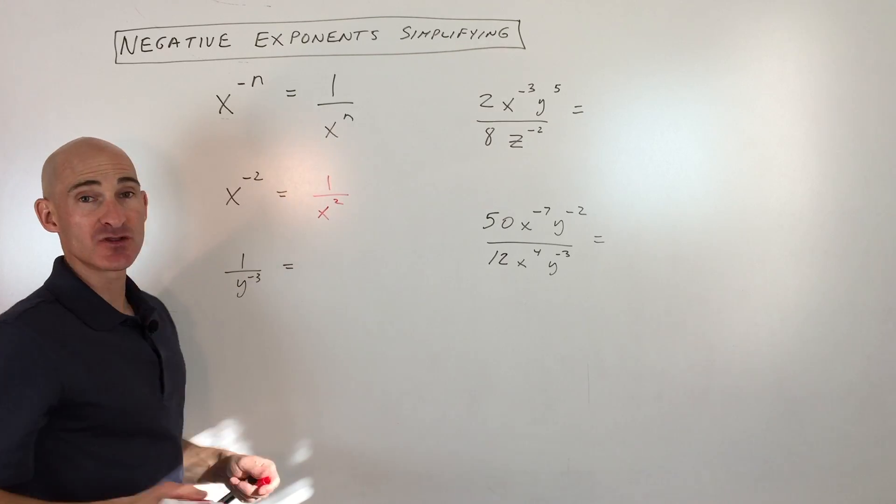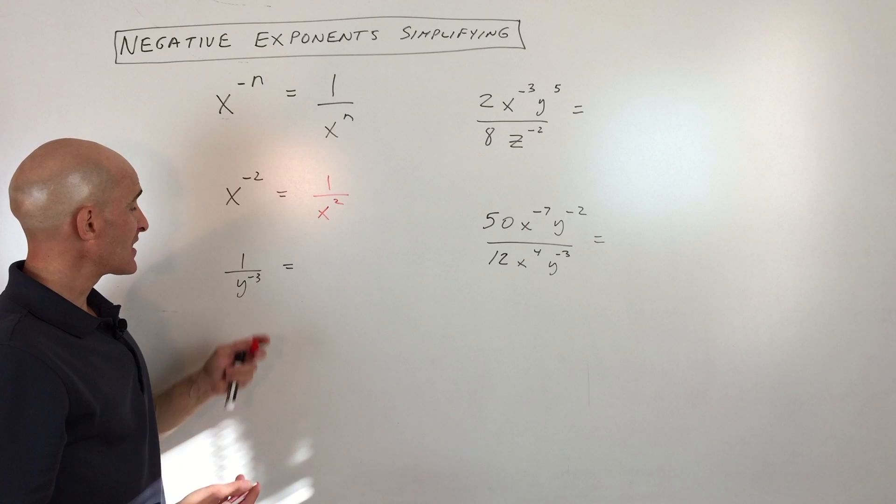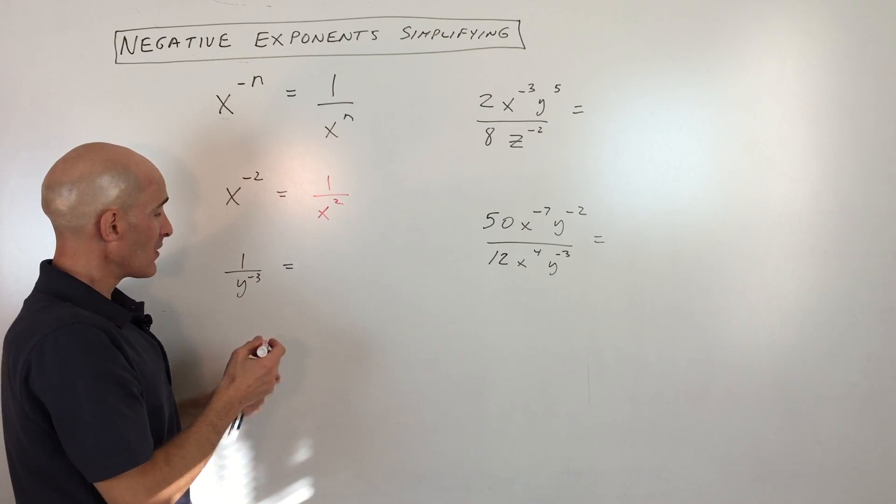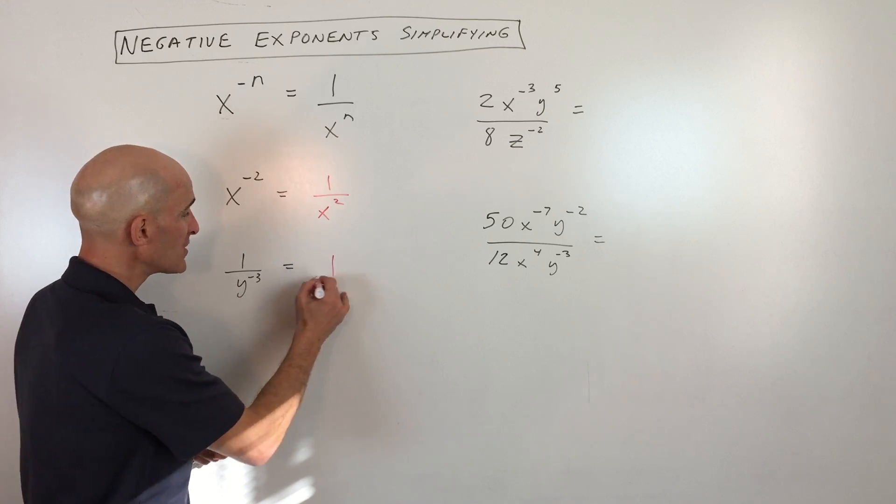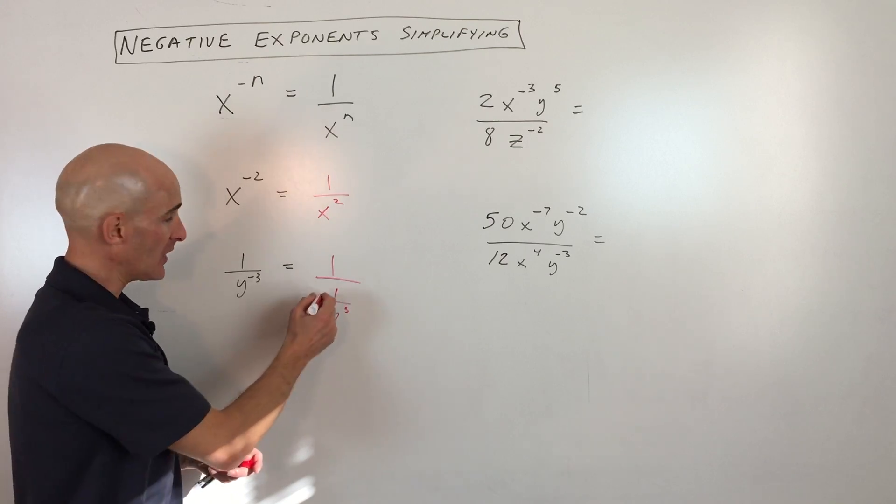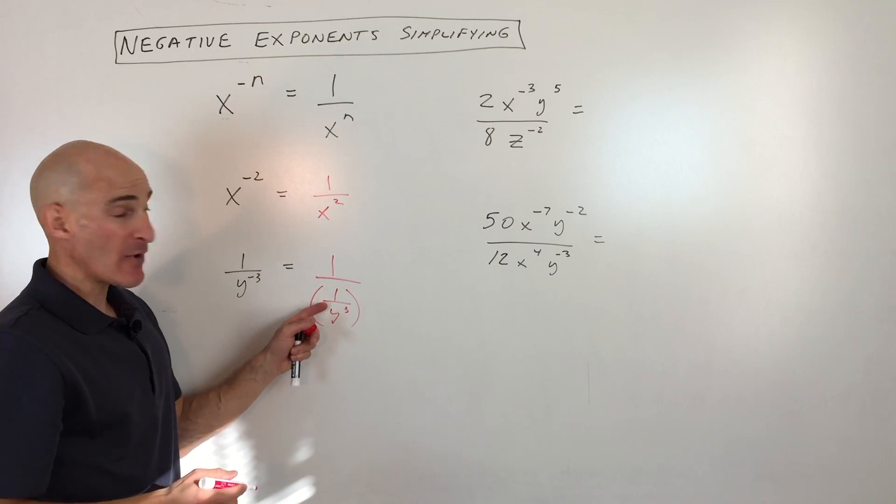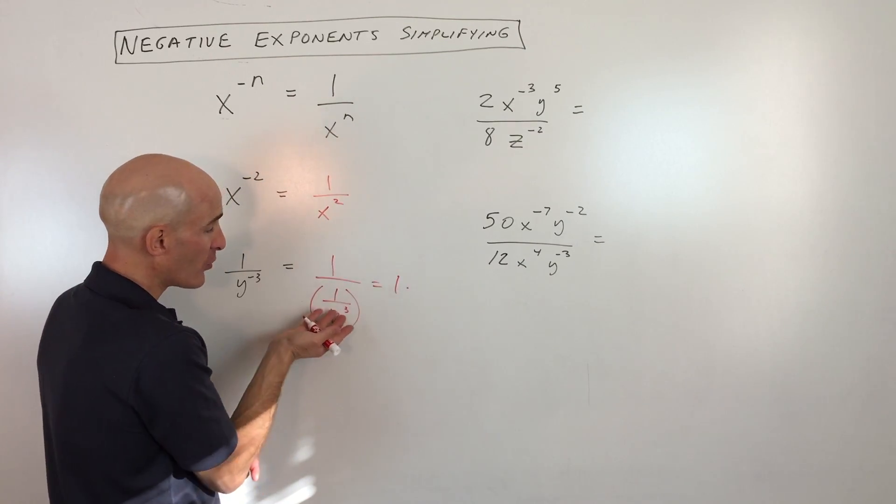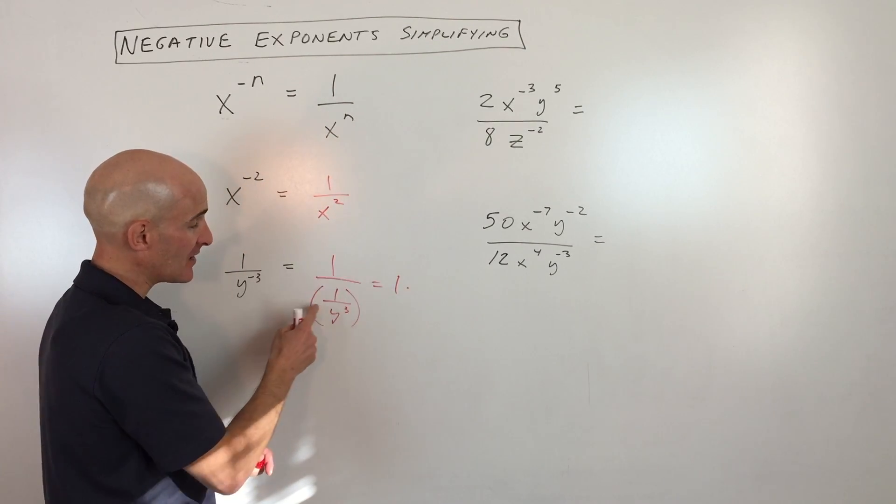Let's take a look at another example. We've got 1 over y to the negative 3. Now when you look at this, you could simplify it as saying y to the negative 3, that's 1 over y to the positive 3. But then when we divide by a fraction, it's the same thing as taking the numerator and then multiplying by the reciprocal, because dividing is the same thing as multiplying by the reciprocal.